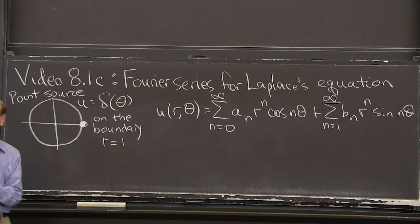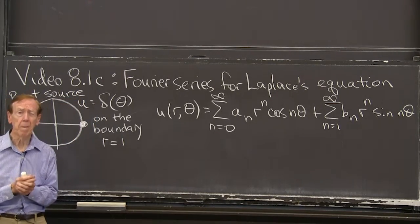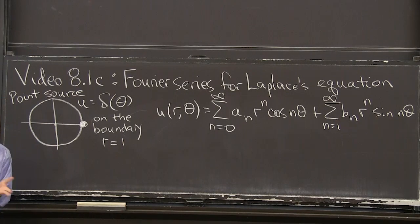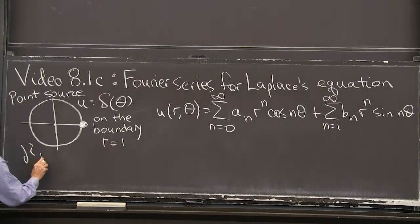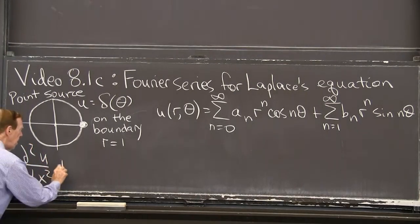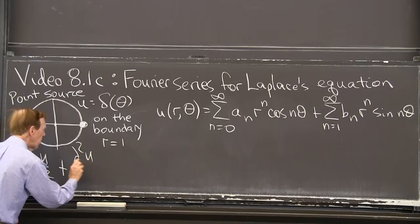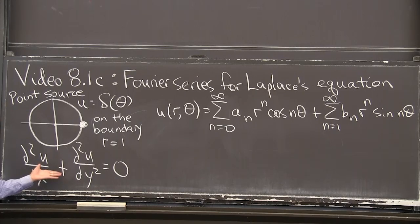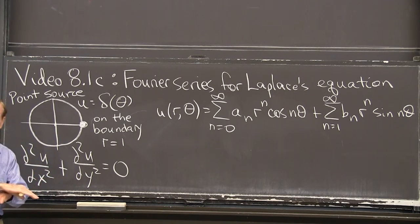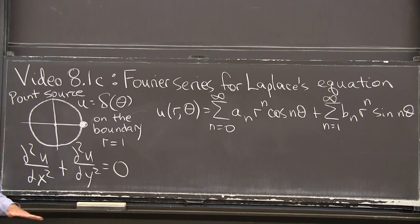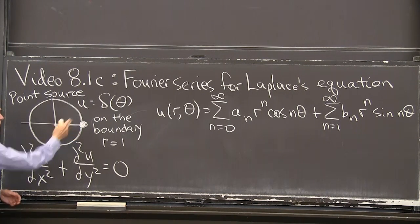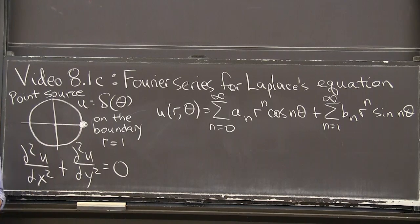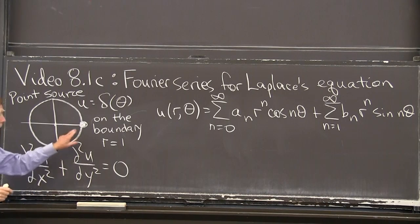We're in a circle. I'm going to make this a nice model problem. So inside this circle, we're solving Laplace's equation. Laplace's equation was the second derivative of u in the x direction plus the second derivative of u in the y direction is 0. That's the way heat temperature distributes itself when you leave it alone.